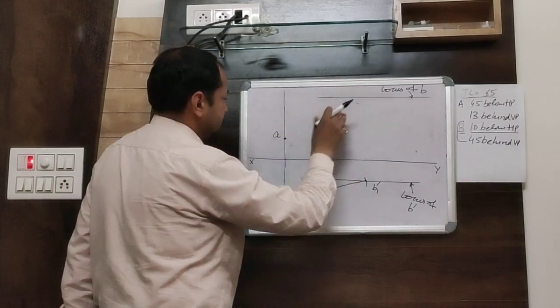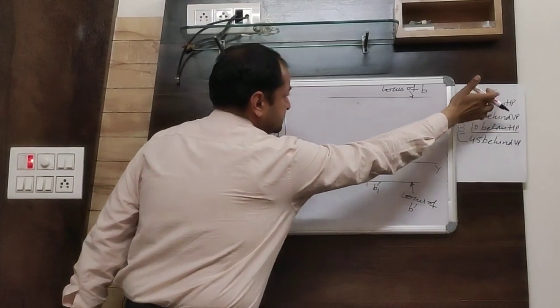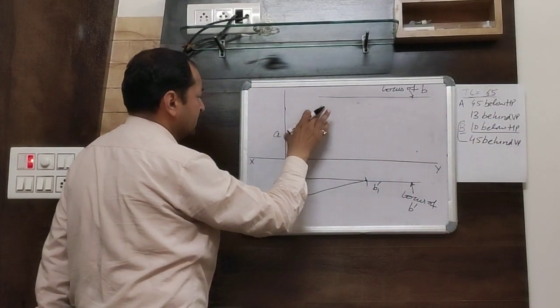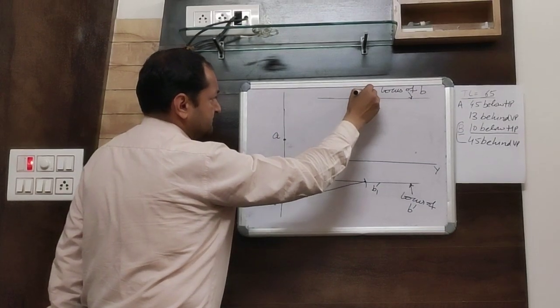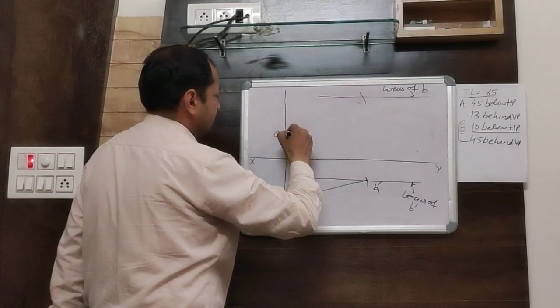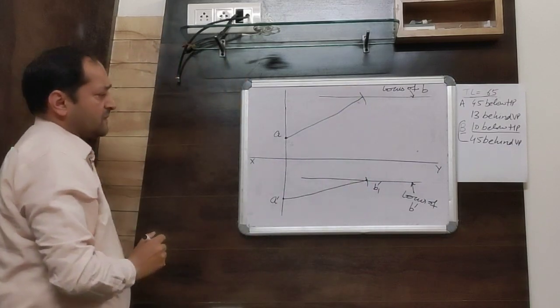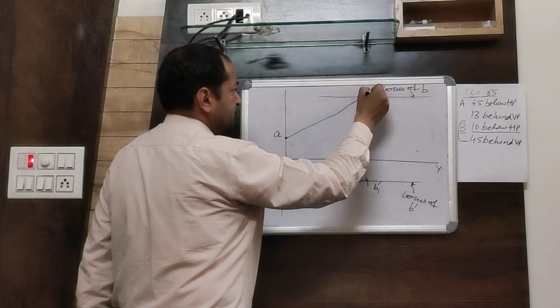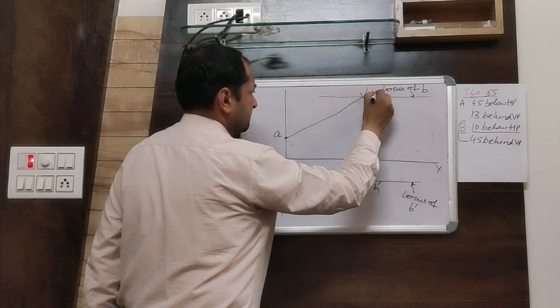Similarly, in the top view, open the compass equal to 65mm and mark an arc taking A as center. Take this point as B2.